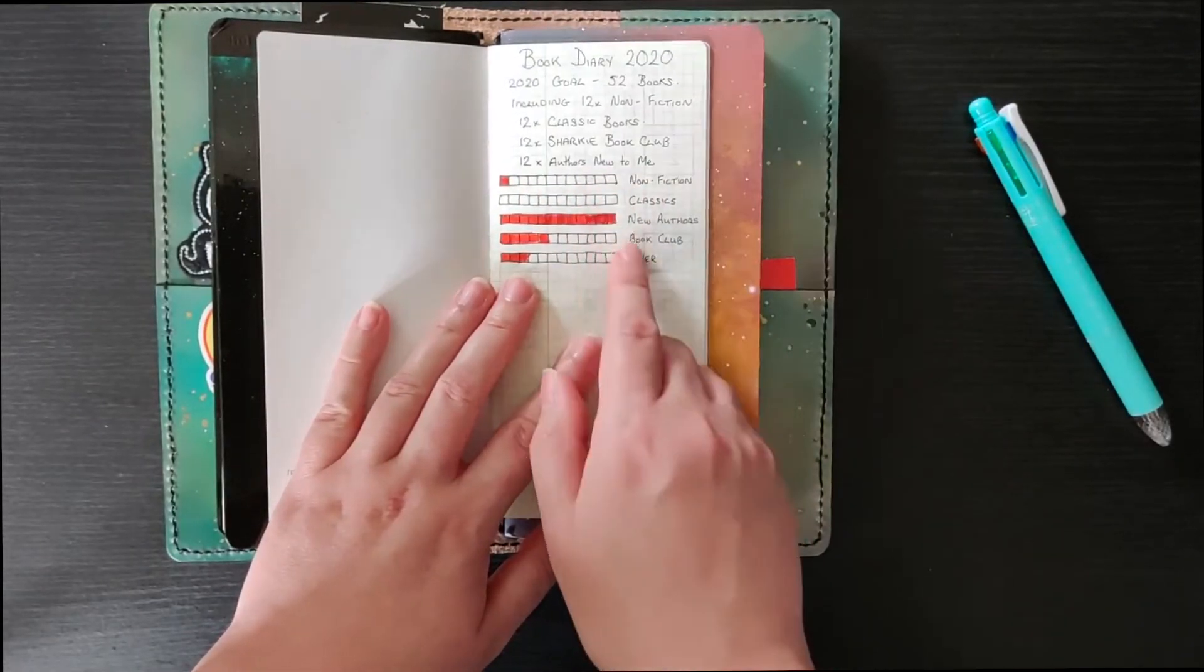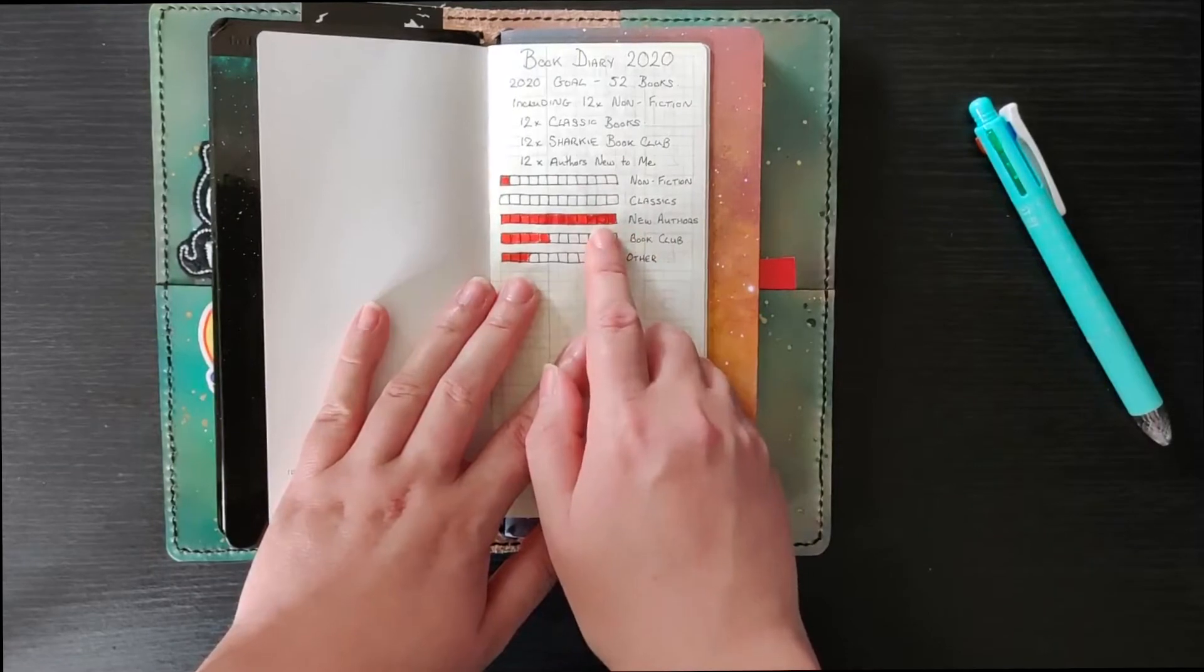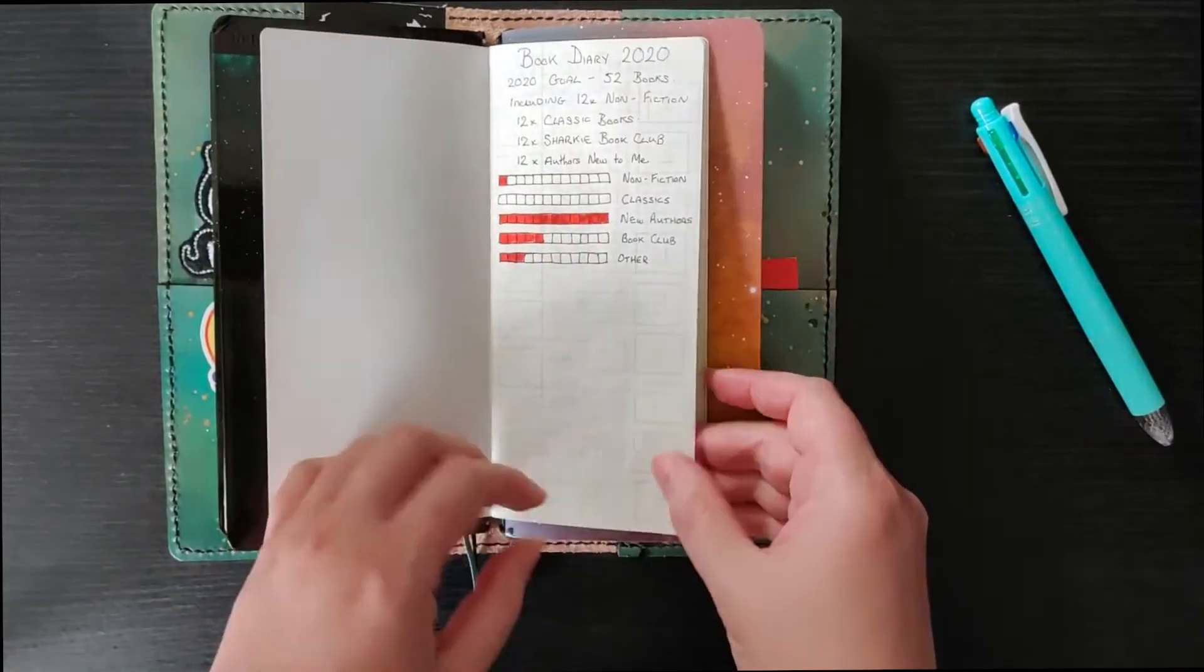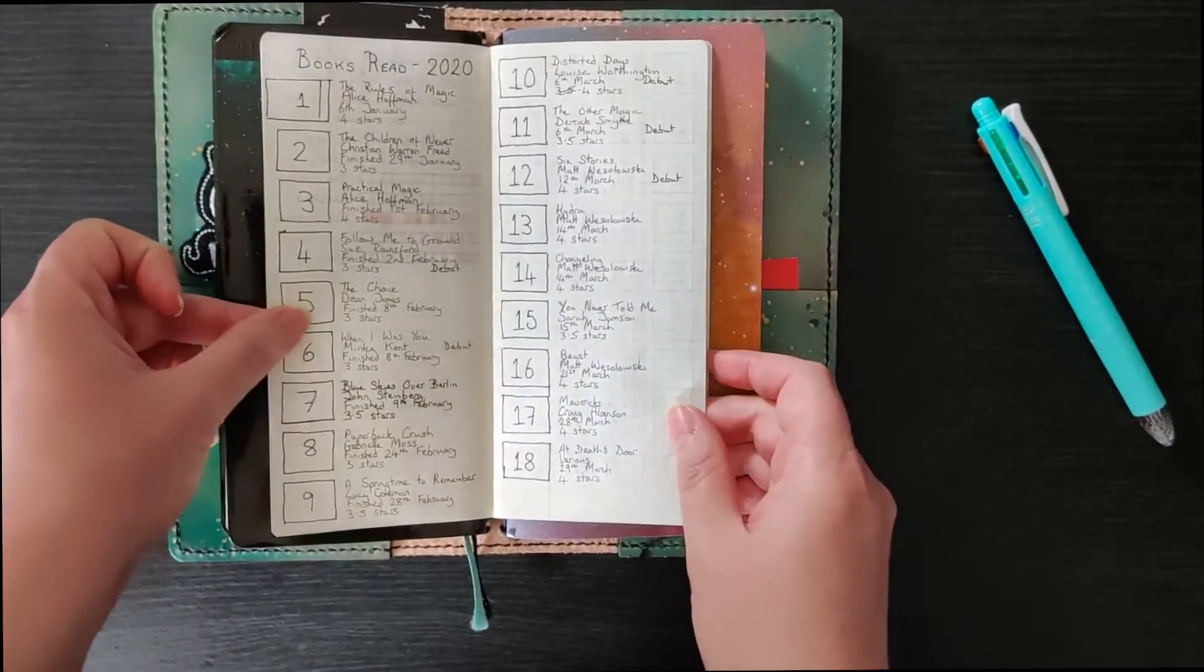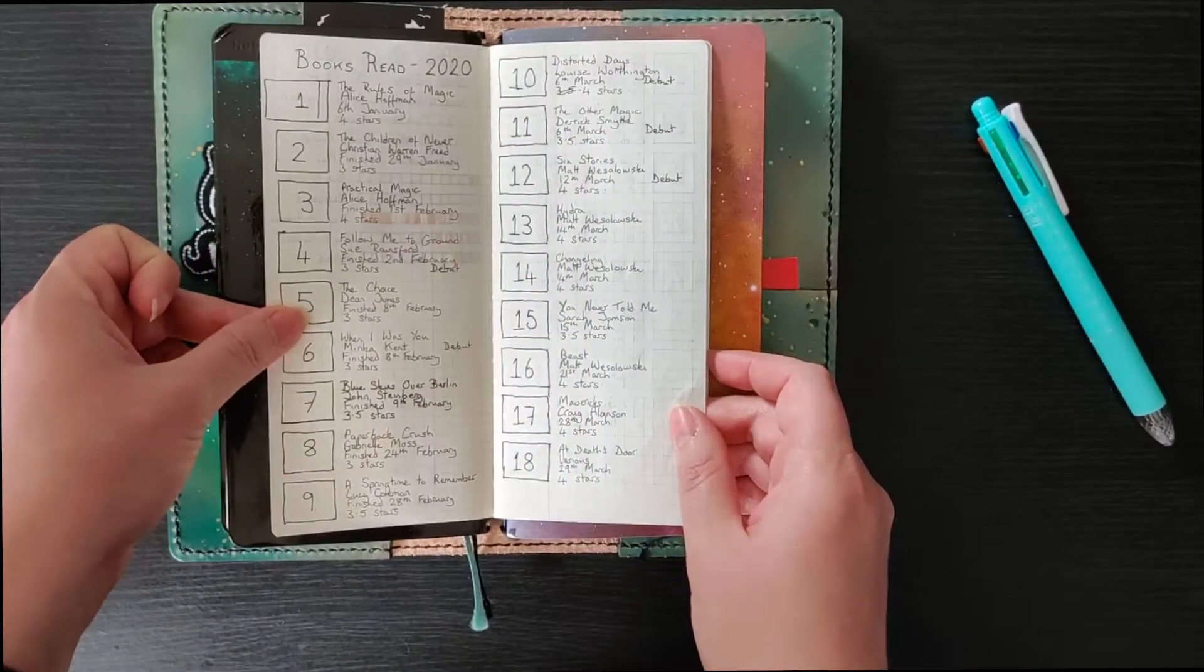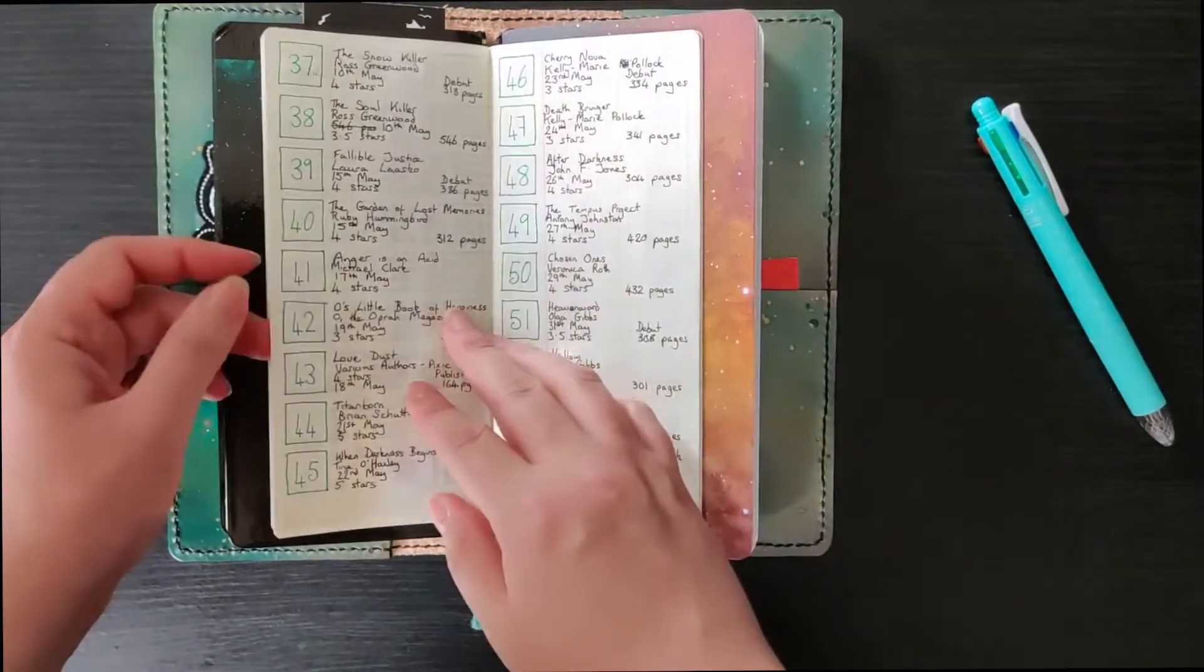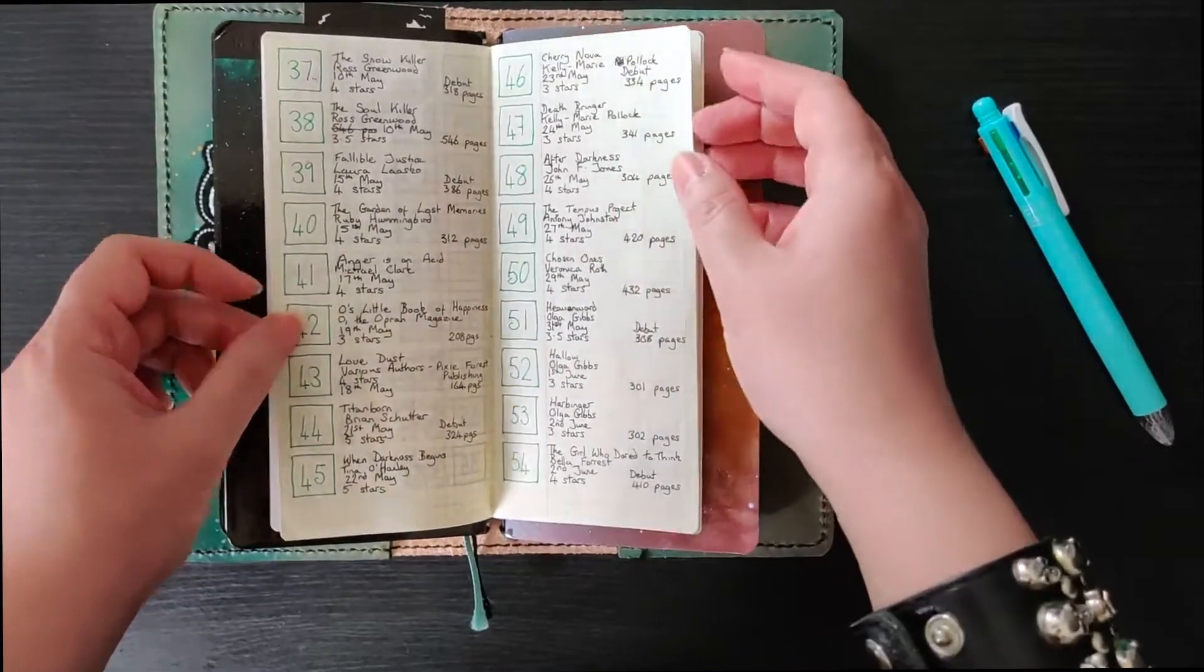So I've since changed that to be more debut authors but I guess it's kind of the same thing. So that's my first page and then the rest of my tracker is really simple. I don't complicate it, it's kind of messy.